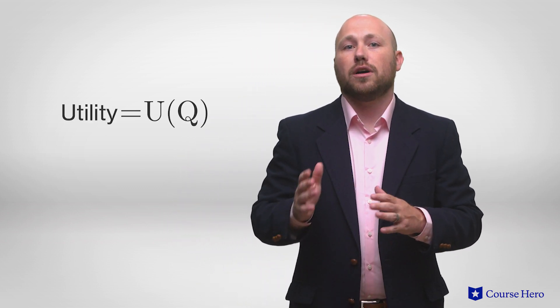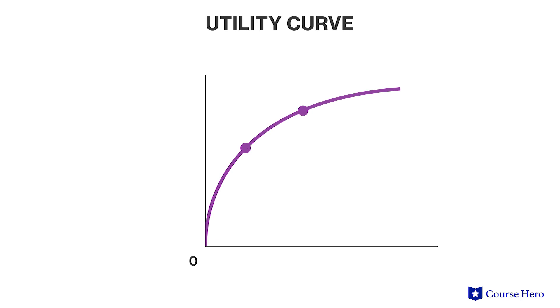A person's utility level indicates how happy a consumer is when consuming a good. For any given good, utility is a function of the quantity consumed of the good. Mathematically, we would say utility is equal to U of Q. Graphically, we plot utility on the vertical axis and the quantity of items a person consumes on the horizontal axis.